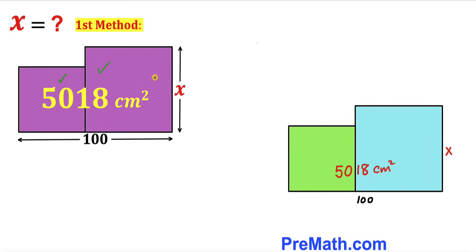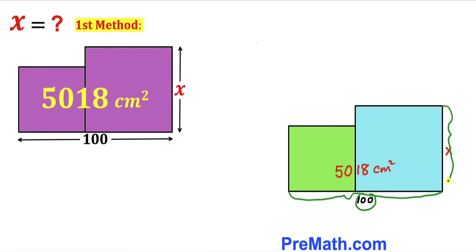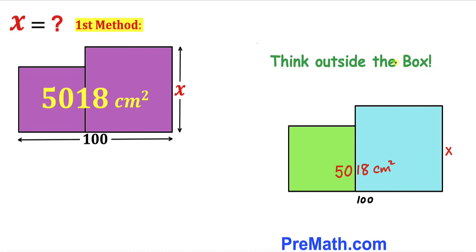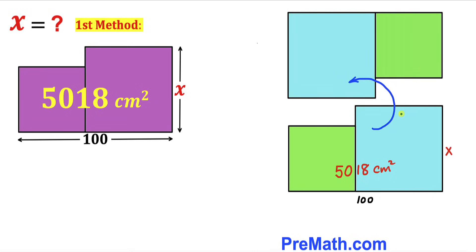Both squares are colored differently. The smaller square is green and the larger square is blue. The combined horizontal length is 100 centimeters, the side length of the larger square is x, and their combined area is 5018 centimeters squared. Now we are going to think outside the box.